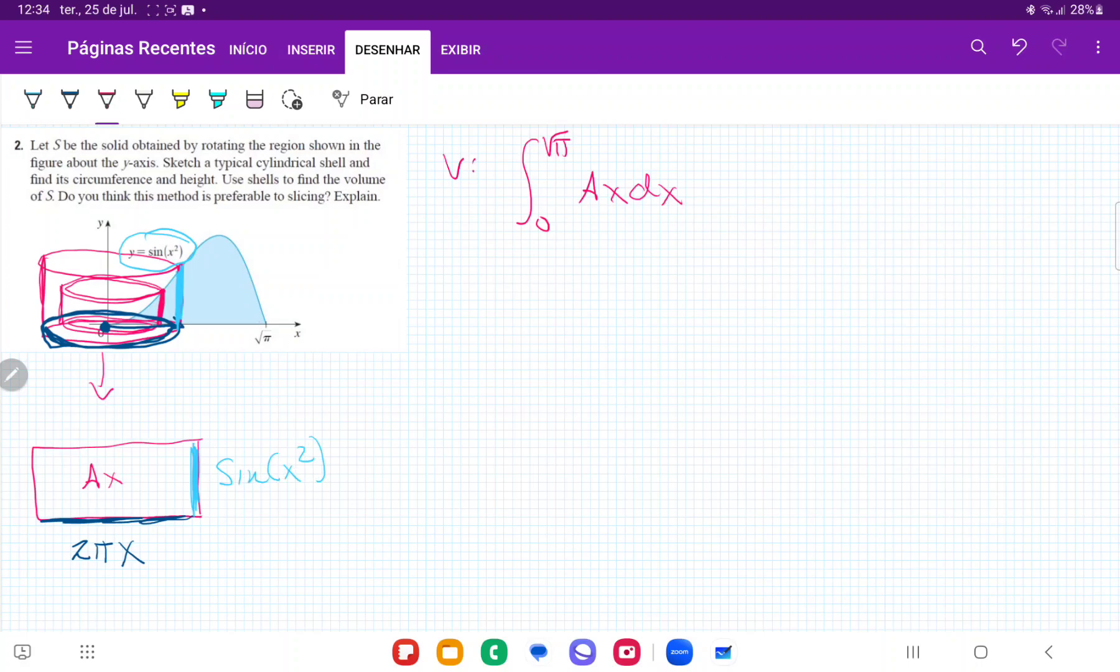So my area, my A of x, my area as a function of x, is given by base times height, so 2 pi x times sine of x squared. So once I have this, I am ready to integrate.